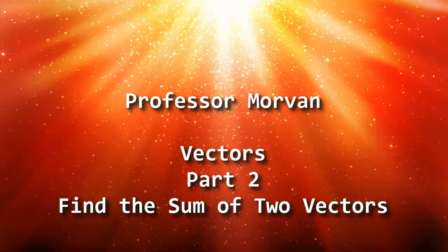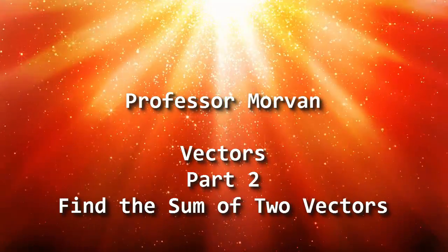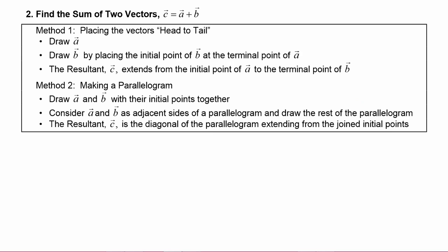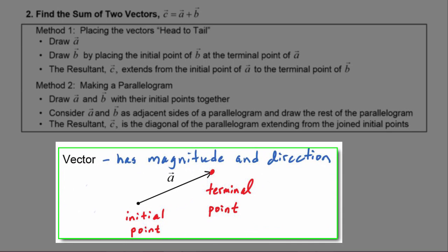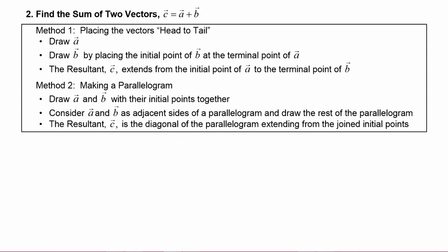In part two of our lesson on vectors, you will learn how to find the sum of two vectors. Remember that a vector has both magnitude and direction, so we have to figure out a way to add something that has both size and direction. We are going to learn two methods to accomplish this. The first method adds two vectors by placing them head to tail; the second method adds them by making a parallelogram. Let's see how these two methods work.